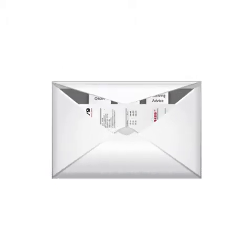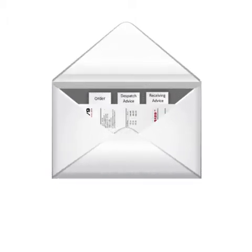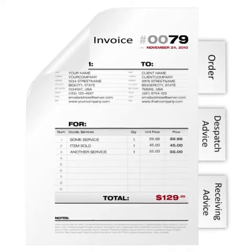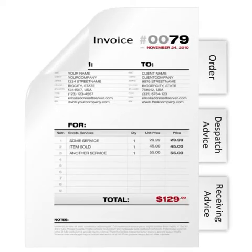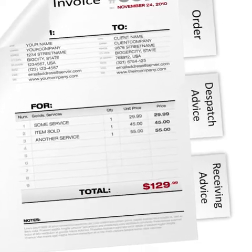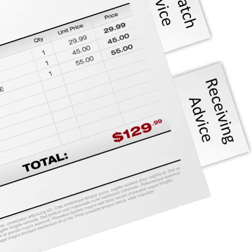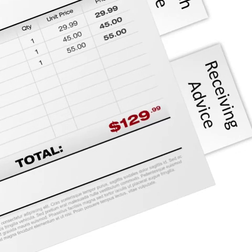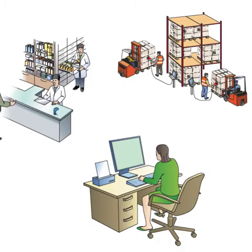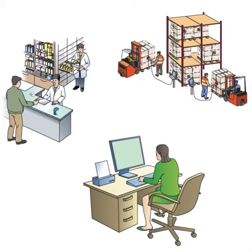Now the seller generates an invoice and sends it to the buyer. The invoice can be based on data from the order, dispatch advice, or receiving advice, depending on the business scenario. The receiving advice gives the best guarantee of avoiding commercial disputes. The buyer places the products at the warehouse and barcodes are scanned when the products are moved to the point of sale or care.